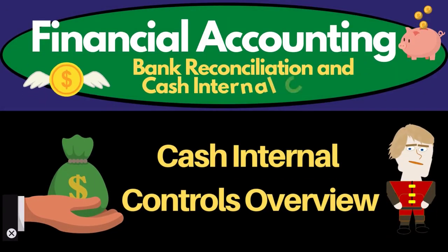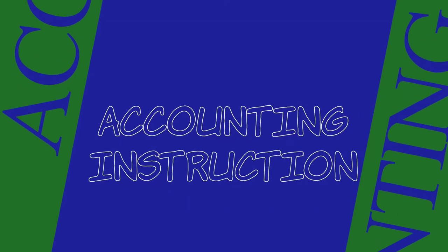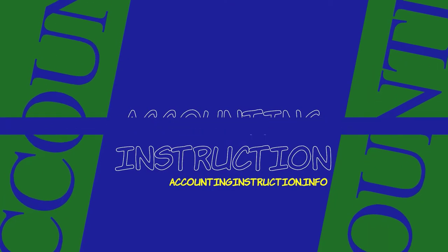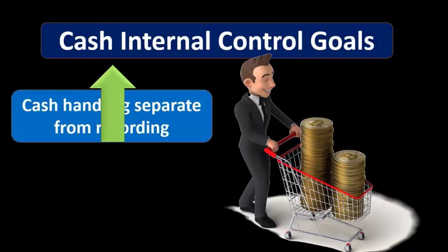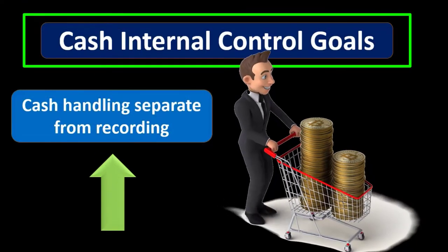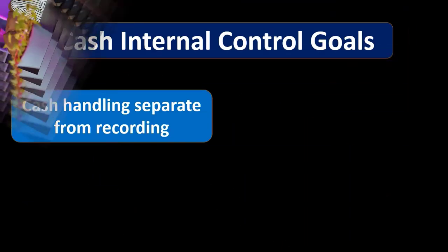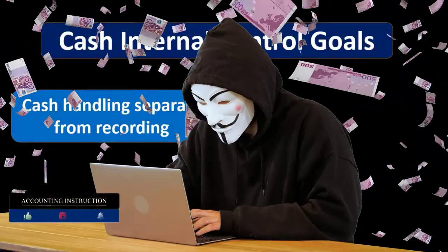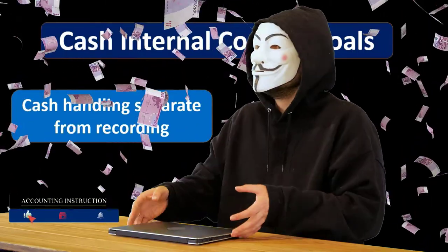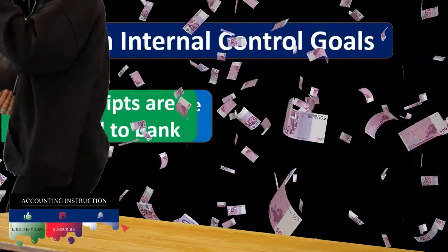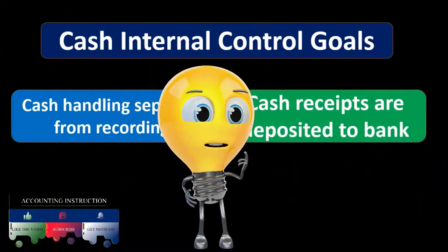In this presentation we're going to introduce the internal controls related specifically to cash. The cash internal control goals are the objectives of the internal control system over cash. We want to have the cash handling separate from the record keeping. Whoever is handling the cash should not be the same person doing the record keeping — that separation of duties means the person entering data has less incentive to steal, and the people handling cash know the record keeping will catch any theft.